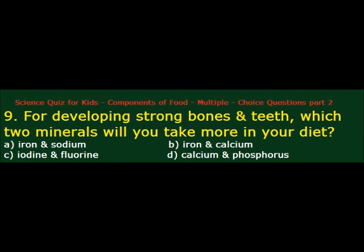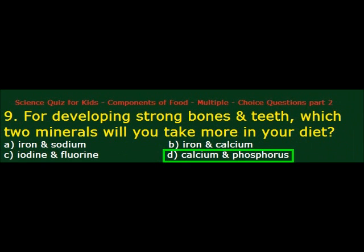For developing strong bones and teeth, which two minerals will you take more in your diet? A. Iron and sodium, B. Iron and calcium, C. Iodine and fluorine, D. Calcium and phosphorus. Answer is D. Calcium and phosphorus.